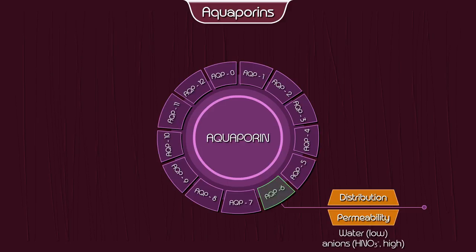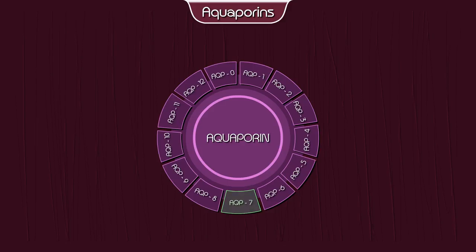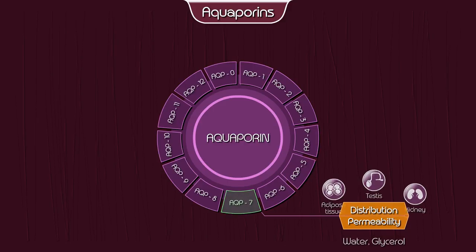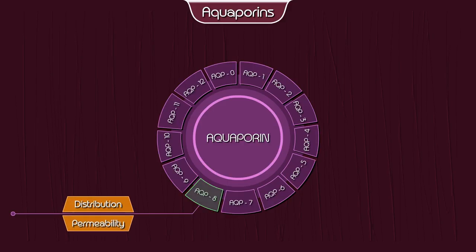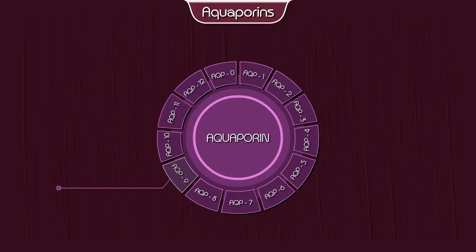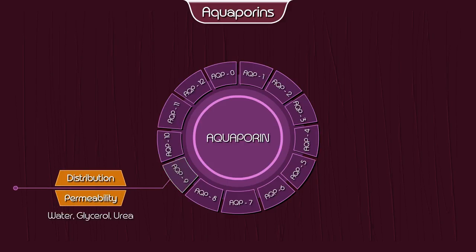Aquaporin 6 — permeability: water and anions; distribution: kidney. Aquaporin 7 — permeability: water and glycerol; distribution: adipose tissue, testes, and kidney.